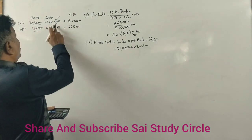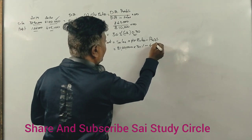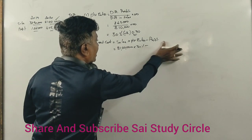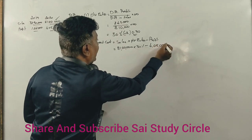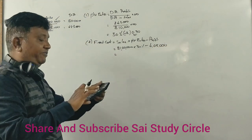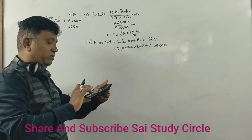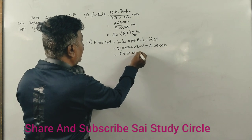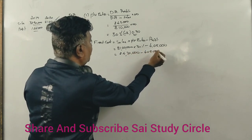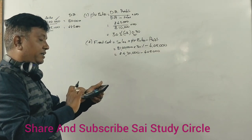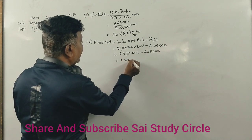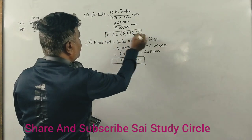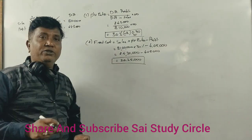Using 2020 figures: Fixed Cost = 81,00,000 × 0.30 − 4,50,000. That gives 24,30,000 − 4,50,000 = 20,25,000. So the Fixed Cost is 20,25,000 rupees. Both PV Ratio and Fixed Cost are now calculated.